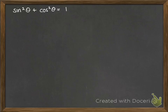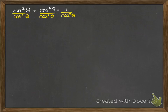Now some identities we can get from this. You already know sine squared plus cos squared equals 1. If we divide all of that by cos squared, we get another interesting identity. Sine squared over cos squared is tan squared; cos squared over cos squared is just 1; and 1 over cos squared — since 1 over cos is sec — we can call that sec squared. So tan squared theta plus 1 equals sec squared theta. That's quite a useful identity to know.